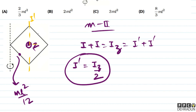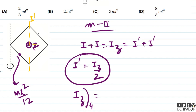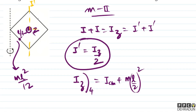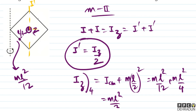इस particular rod का इस axis के about moment of inertia निकालने के लिए parallel axis theorem लगाना होगा। Iz of 4th rod = Icm + M×(L/2)² = ML²/12 + ML²/4 = ML²/3।